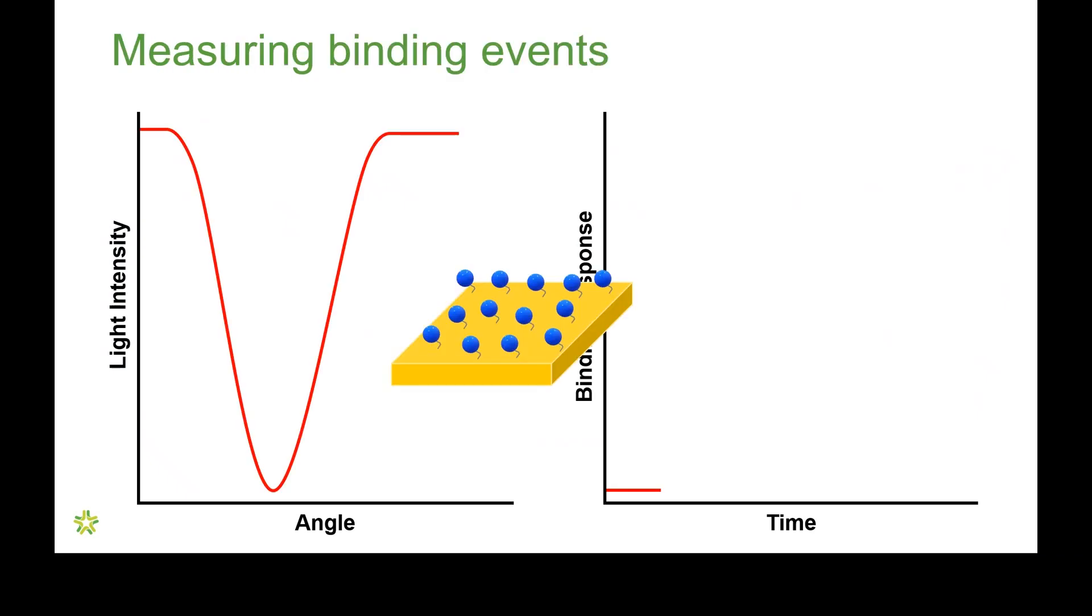So, at the start of an experiment, we have a bunch of ligand immobilized on the surface. We have a dip minimum at a starting angle and a binding response that's generating a baseline. There's nothing happening yet, but then we begin to introduce analyte, which binds to the ligands. The dip minimum begins to move to the right, to a higher angle. The binding response begins to increase.